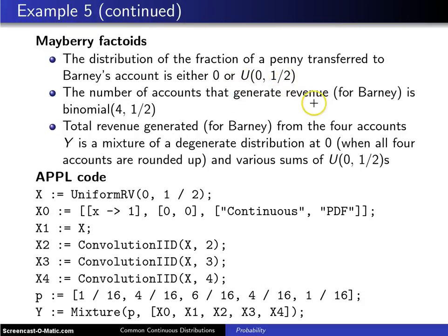The number of accounts that generate revenue, that is for Barney, is a binomial distribution with parameters n equals four and p equals one-half.